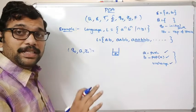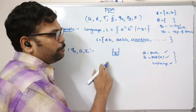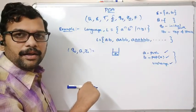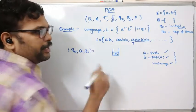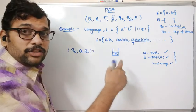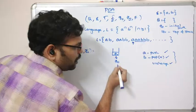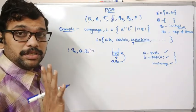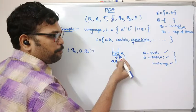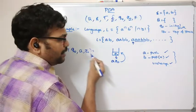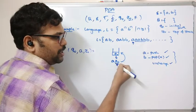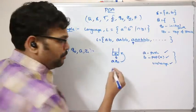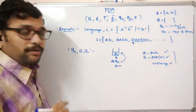Whenever we get an 'a' we push it onto the stack, and whenever we get a 'b' we pop an 'a' from the stack. To push 'a': remove z₀ from the stack, append the input 'a' to it, then push back into the stack from right to left — so first push z₀, then push 'a' on top.